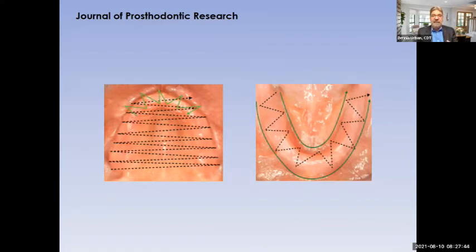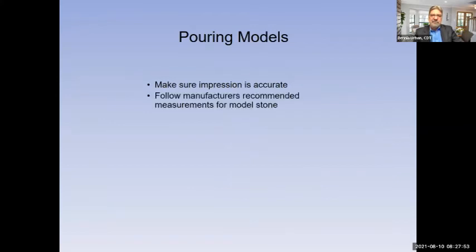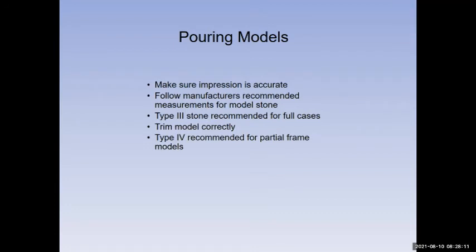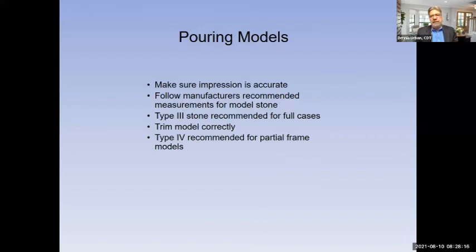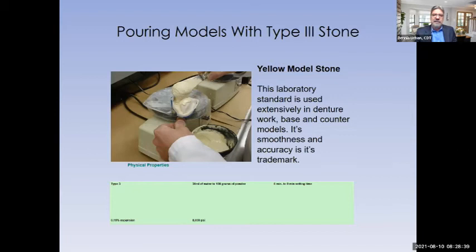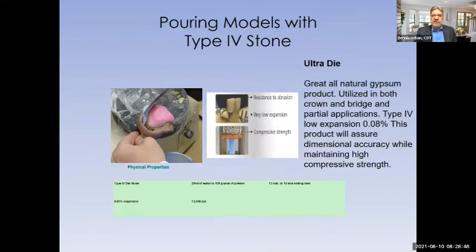You can scan an impression and send us an STL file — that helps too. But today we're getting back to basics with taking impressions. After pouring models, follow the manufacturer's recommended measurements. A Type 3 stone is recommended for full cases — especially on immediate cases — because we have to break apart the models after processing and we want the model to give before the denture gives. Type 4 stone or high compressive stone is recommended for partial frame models because we're constantly taking that framework on and off.